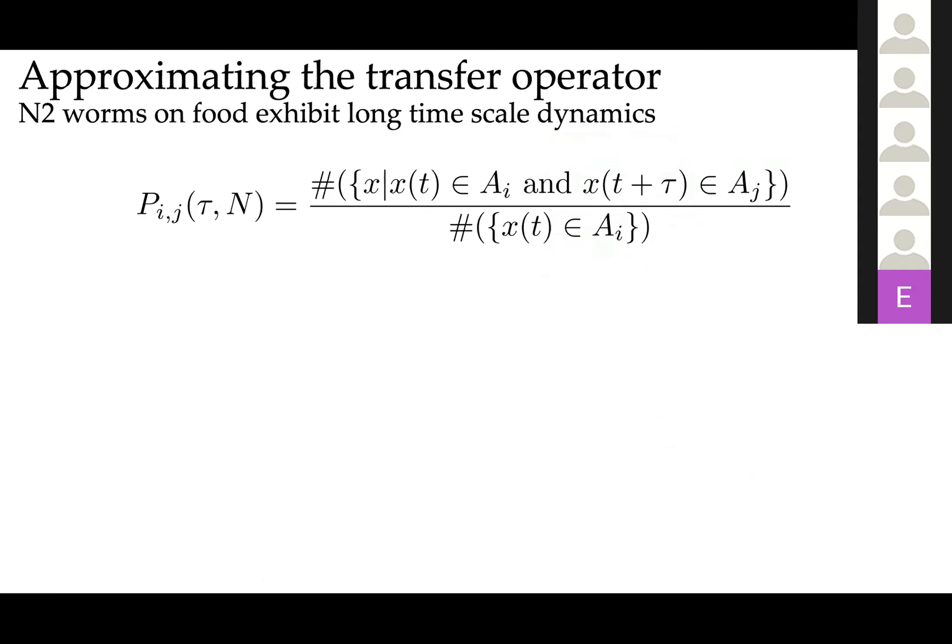We will guide our choice of tau essentially by asking that the Markov chain is approximately Markovian. In order to do that, we're going to make use of the Chapman-Kolmogorov identity, which basically states that if I act on densities with the operator n times, and if the operator is memoryless and fully Markovian, then that's the same as acting on the density with an operator built on a timescale of n times tau.